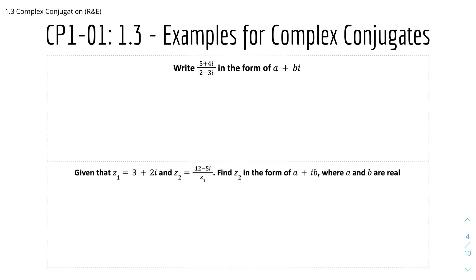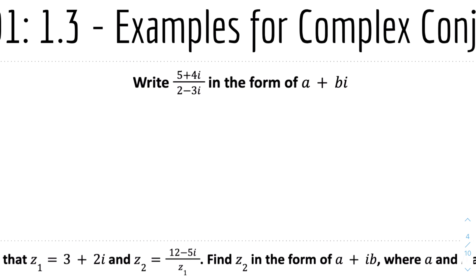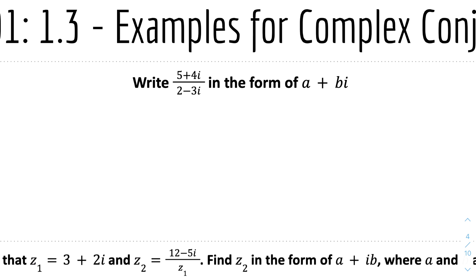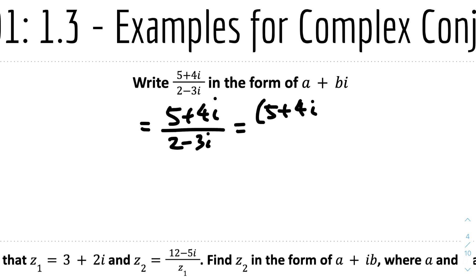Now for Example 1: write (5 + 4i) / (2 - 3i) in the form a + bi. Just like rationalising the denominator where the bottom is something like 2 - √3, we multiply the top and bottom by the conjugate of the denominator. So we multiply top and bottom by 2 + 3i to get rid of the imaginary part on the bottom.